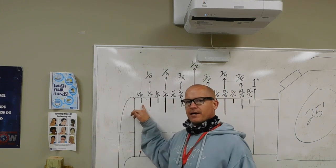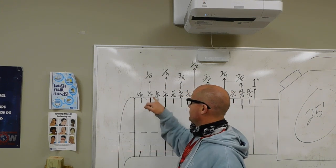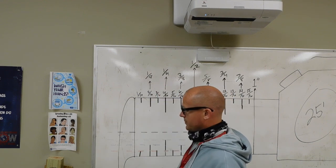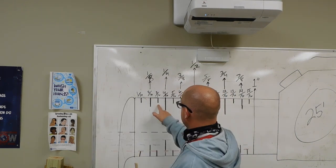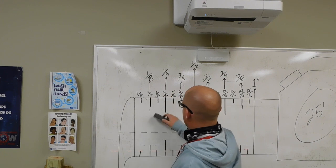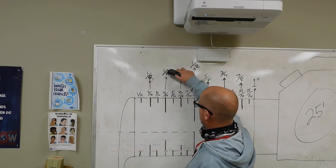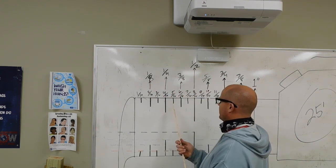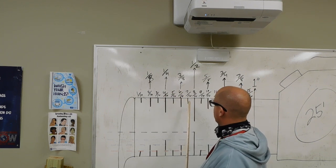So 1 sixteenth, this fraction cannot be reduced any further. However, 2 sixteenths can be reduced to 1 eighth. 3 sixteenths cannot be reduced, but 4 sixteenths can, so 1 fourth. 5 sixteenths cannot be reduced, 6 sixteenths can, 3 eighths, and so on and so forth.